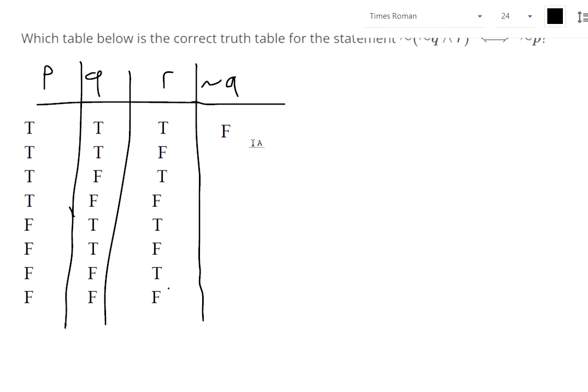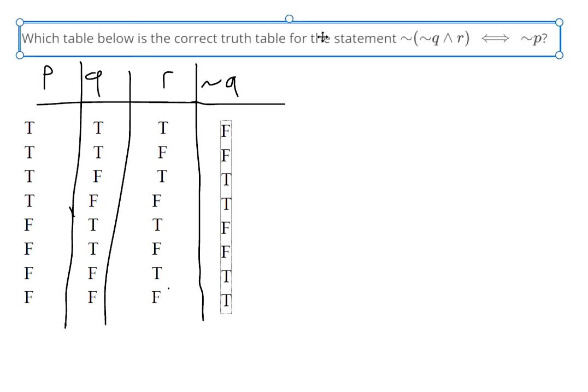So that is just the negation of everything we see in the Q column. And I'm just reading it left to right, that's why I started with not Q. And then I need to have R, which I have right here, I don't need to fill anything out there.